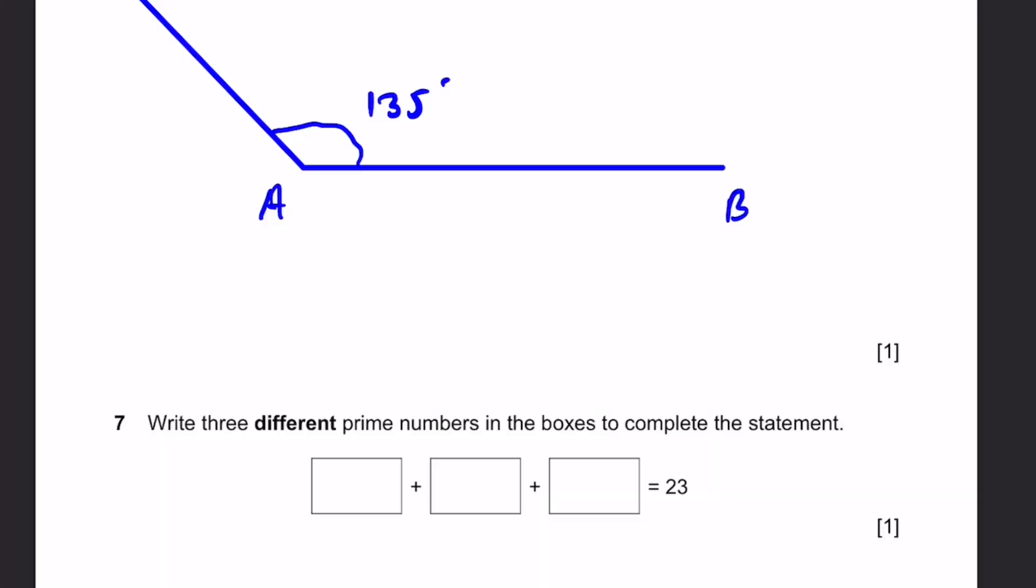Question 7. Write three different prime numbers in the boxes to complete the statement. Dash plus dash plus dash equals 23. There are many different answers. I'm just going to write one. 3 plus 7 plus 13 equals 23. That's the answer.